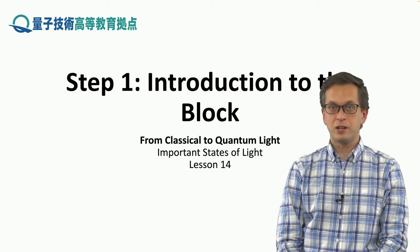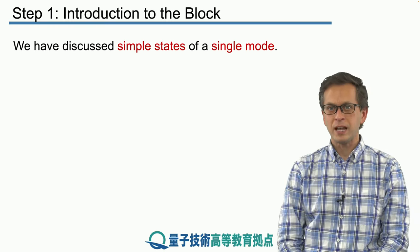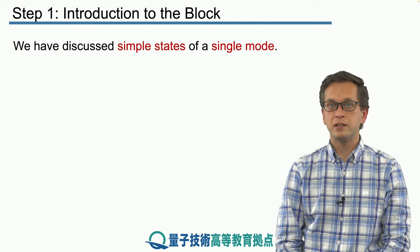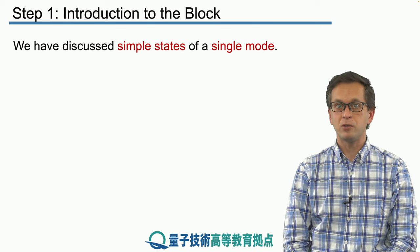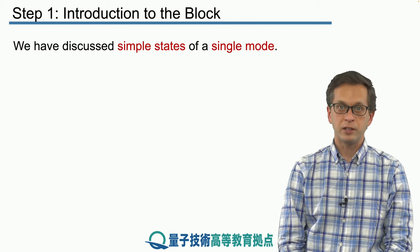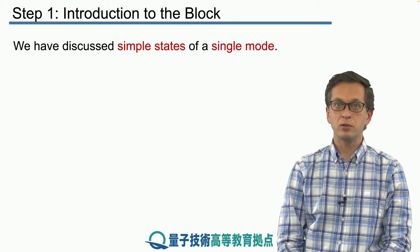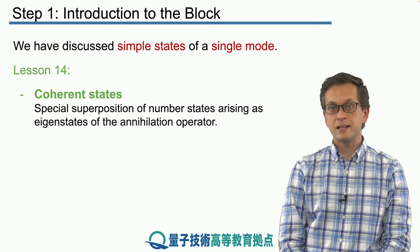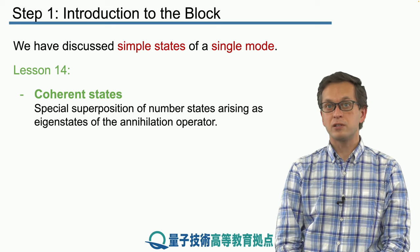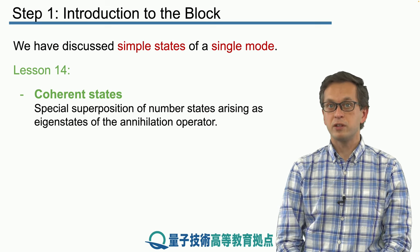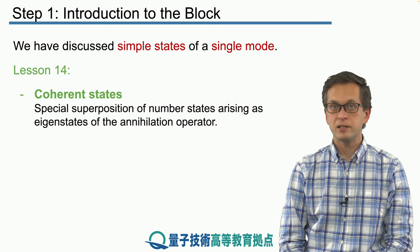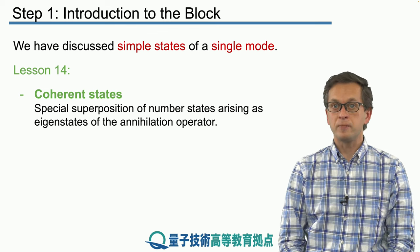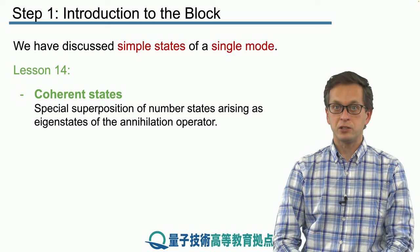So let's begin with an introduction to the block. As we said, everything we've done so far was very basic, just to teach you the basic techniques of calculating photo detection signals coming from single photons or from vacuums. Therefore, in this lesson we will talk about coherent states. Coherent states can be written as a superposition of number states and they arise as a special case of being the eigenstate of the annihilation operator.